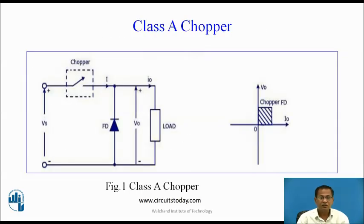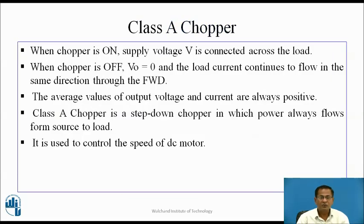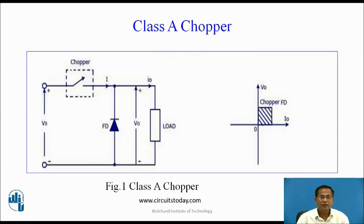This is the circuit diagram for the Class A chopper. The dotted rectangle represents the chopper switch with internal firing circuit, commutation circuit, plus protection circuit, and FD is the freewheeling diode. When the chopper is on, supply voltage will connect across the load. During T-on, when the gate pulse is applied to the chopper switch, it acts as a short, so input appears across the output. For this duration, the current flows through Vs, chopper switch, and load. Assume that the direction of voltage is positive and the direction of current is positive, and the chopper operates in the first quadrant.